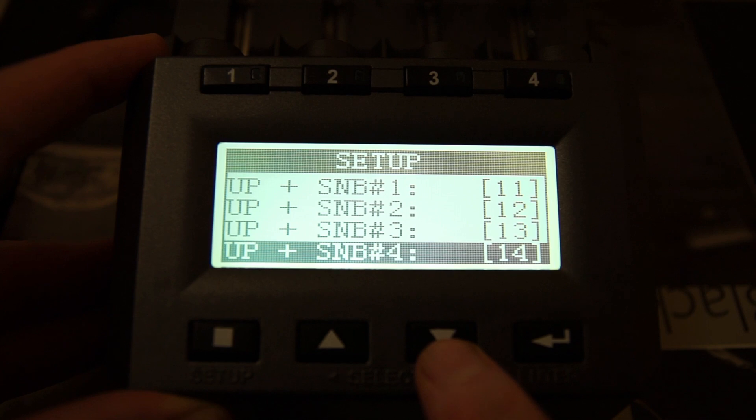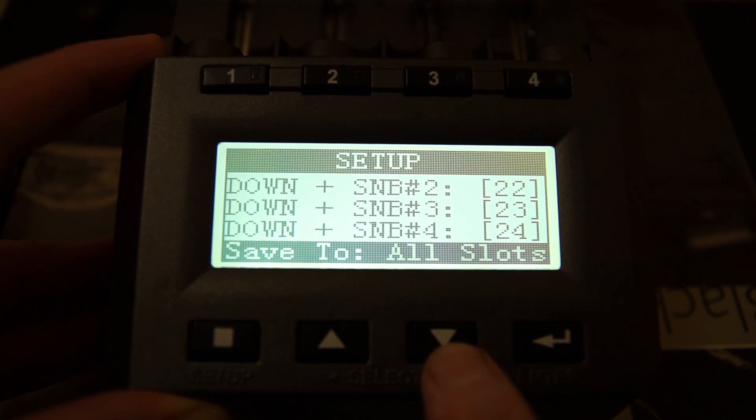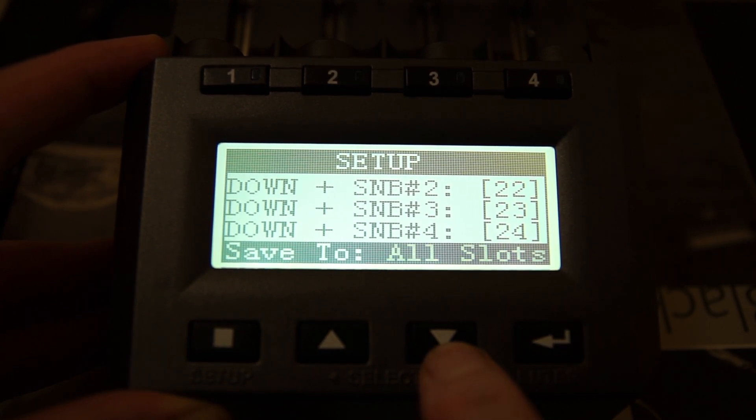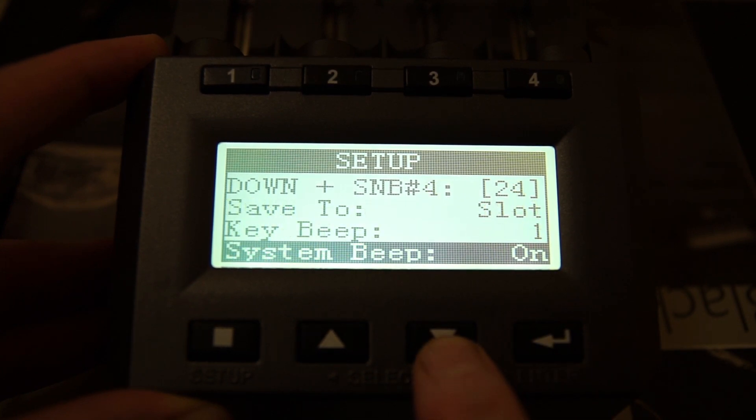One thing to note with this is you need to press the enter button once you've finished changing a setting. The up and SNB is the slot number button, so that's up or down, gives you shortcuts to programs that you have stored on the charger and various other options, allowing you to save to single or all of the slots.